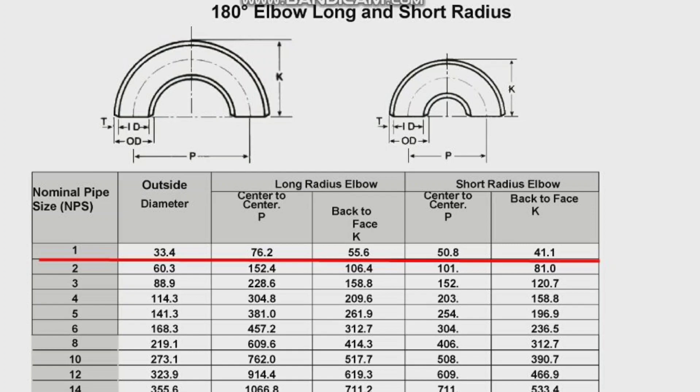For short radius elbows, P, center to center, is 50.8 mm. Back to face, K, is 41.1 mm. Also you can see another size elbows dimensions in this chart.